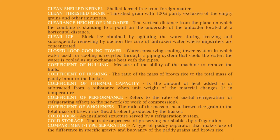Coefficient of performance: the ratio of useful refrigeration or refrigerating effect to the net work or work of compression. Coefficient of wholeness: the ratio of the mass of head brown rice grain to the total mass of brown rice — head and broken — produced by the husker. Cold room: an insulated structure served by a refrigeration system. Cold storage: the trade or process of preserving perishables by refrigeration.